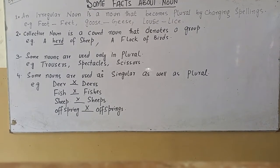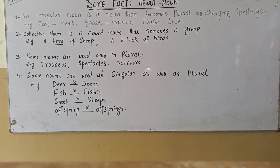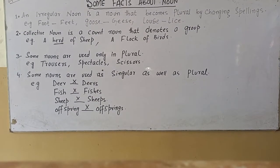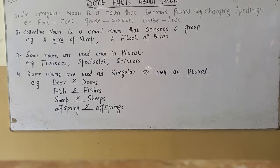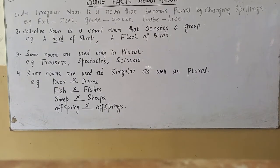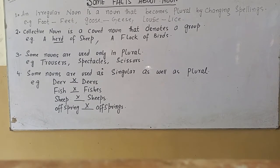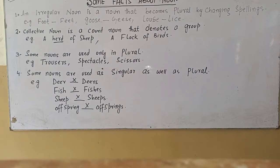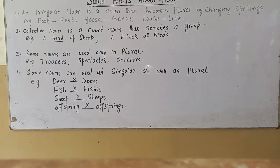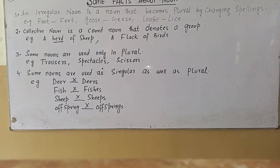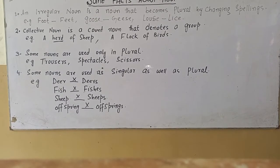Fact number three, some nouns are used only in plural. For example, trousers, spectacles, scissors, tidings, drawers, riches.